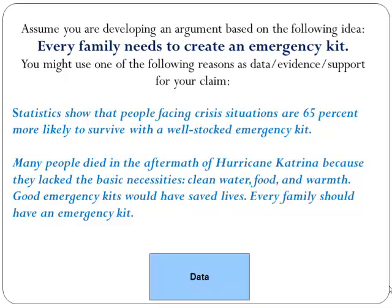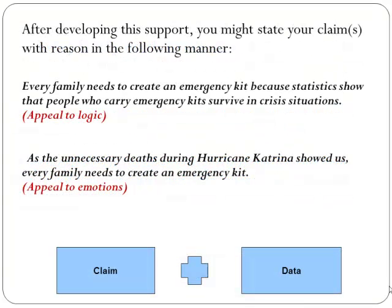Good emergency kits would have saved lives, so every family should have an emergency kit. After developing this support, you might state your claim with reasons as follows: 'Every family needs to create an emergency kit because statistics show that people who carry emergency kits survive in crisis situations' — this is an appeal to logic. Or, 'As the unnecessary deaths during Hurricane Katrina showed us, every family needs to create an emergency kit' — this is an appeal more to emotions.